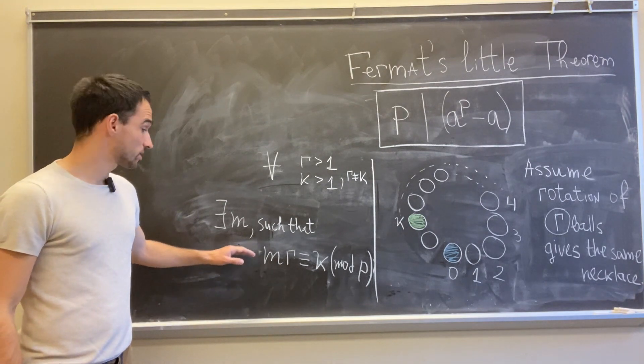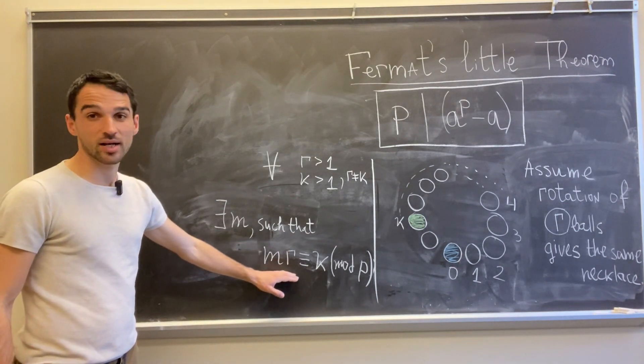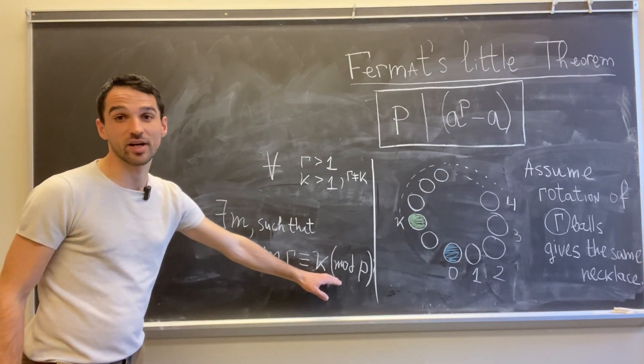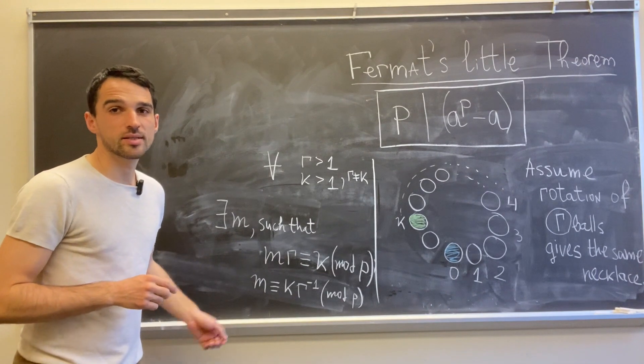So there is always some m such that m times r gives the same remainder as k when we divide by p. We can see this easily.